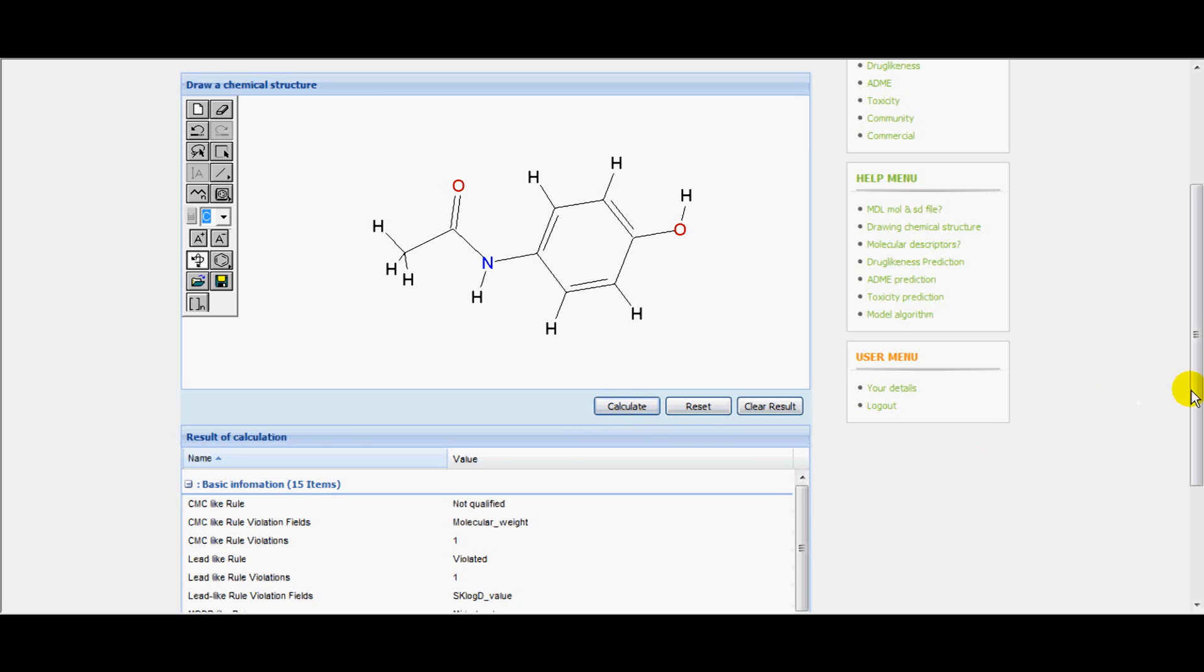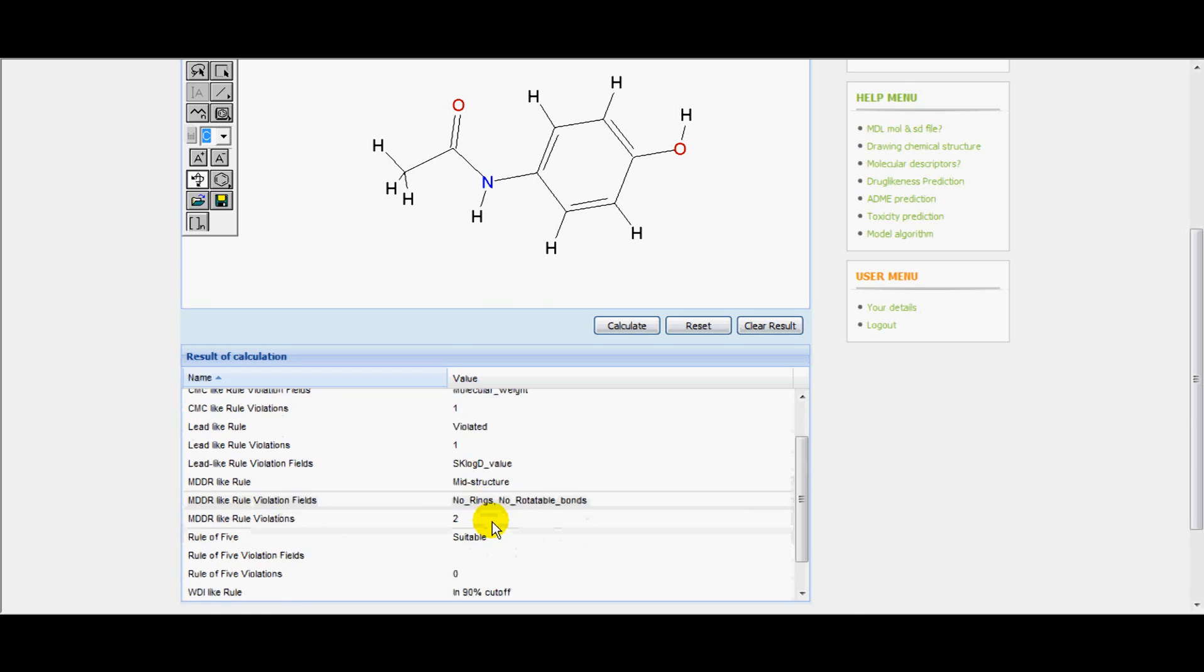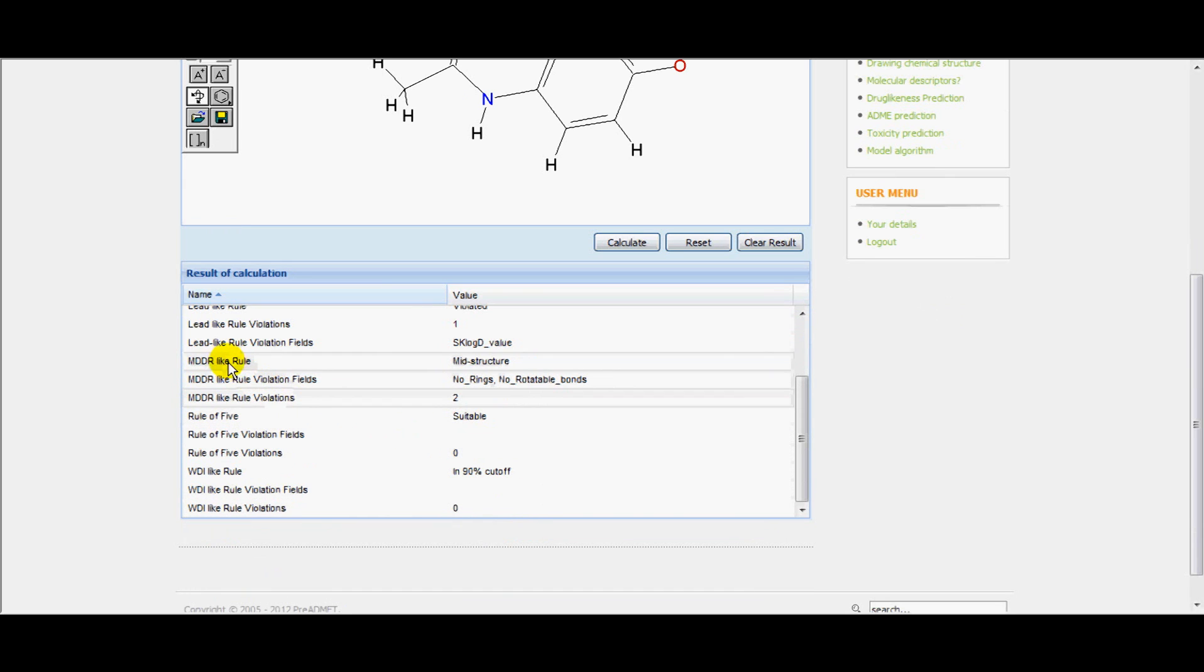Now click on the calculate button. In the result, all the values of calculation are displayed with CMC-like rule. It is not qualified. Its violation field is molecular weight. Like that, LEAD-like rule violations, MDDR-like rules violation, rule of 5 and WDI-like violations also given. Now we can copy the result and paste into a document for further comparison.